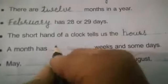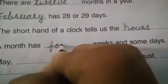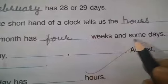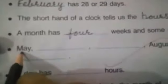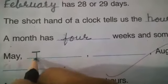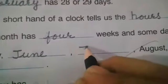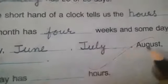A month has four weeks and some days. Which month comes after May? June, then July, August, September.